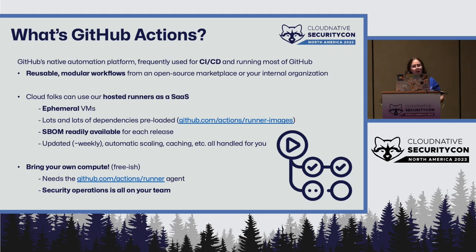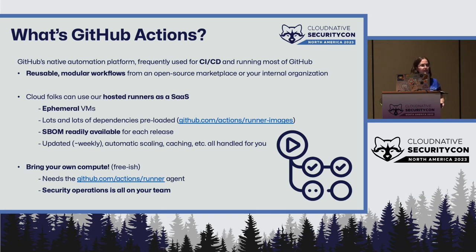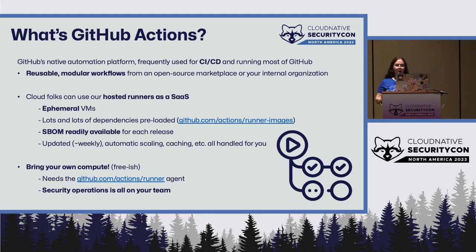We're here to talk about what happens when you bring that into your own network and run it on your own Kubernetes cluster — and that is free, in that you don't pay GitHub for it. You pay your commodity cloud compute, data center co-location, whatever compute cost you have. For that, GitHub ships the runner agent — it's open source. The trade-off is that all of the security operations and all other operations are on you and your team, which is an uneven and often unexpected burden for security teams.